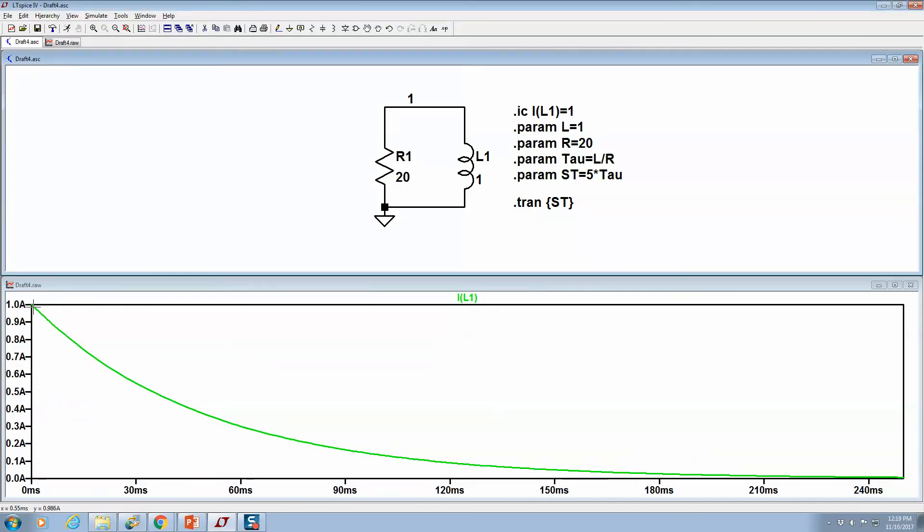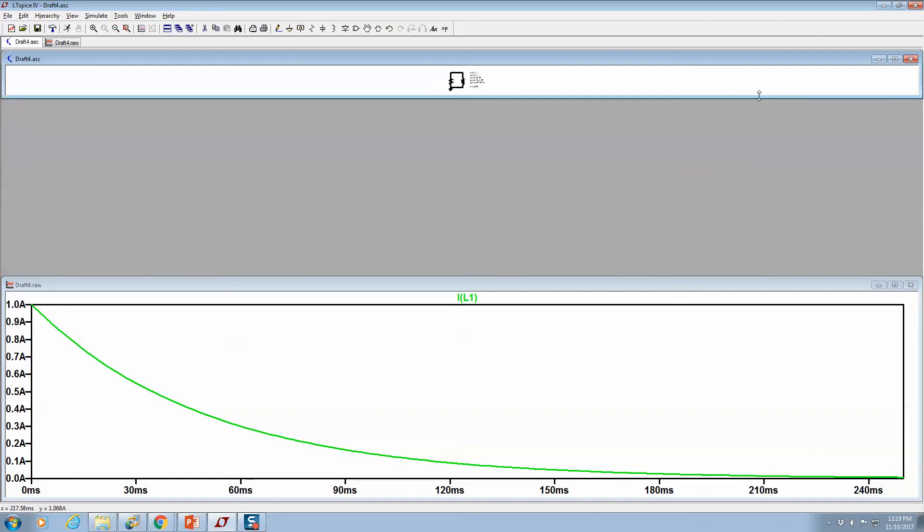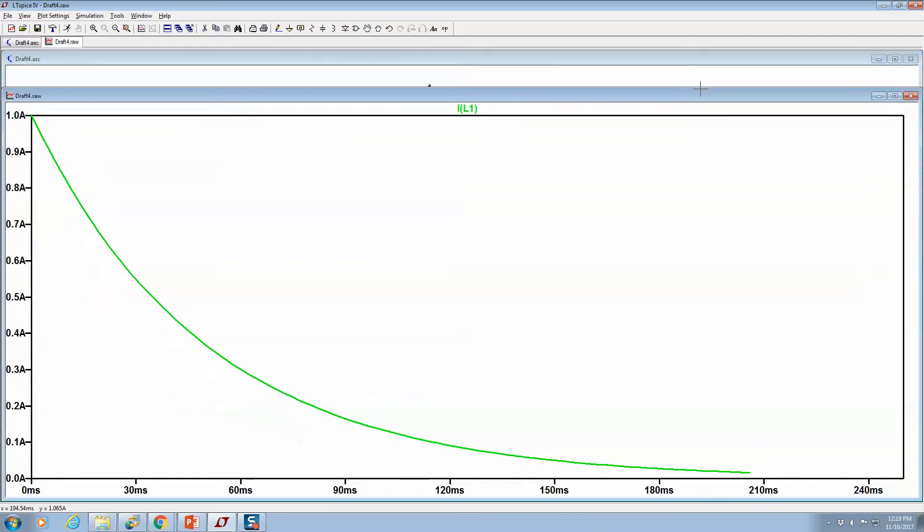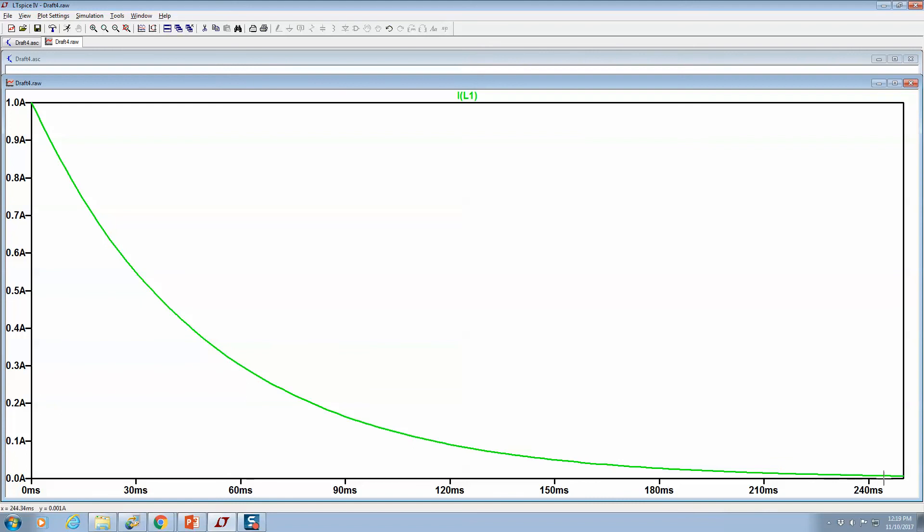My bad, I gotta change it there. All right, it starts off at one, the time has changed, but notice the way I've automatically set it up is that I'm automatically simulating for five tau. And so you can look, if you look right there it's not exactly zero, but from an engineering perspective, if I was measuring this on a scope, that's what we would call zero.